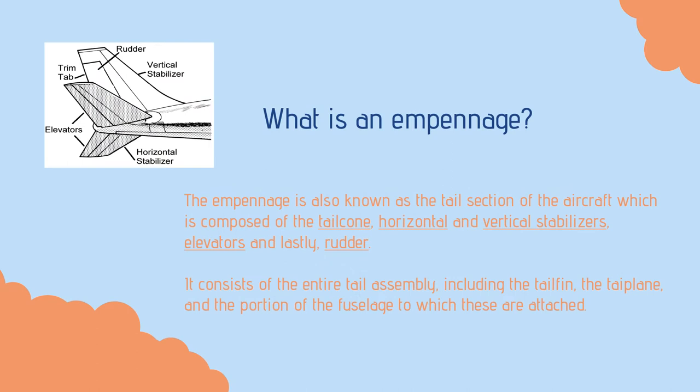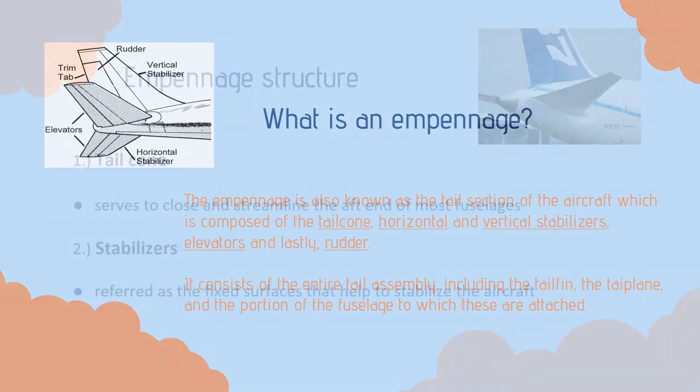It consists of the entire tail assembly, including the tail fin, the tail plane, and the portion of the fuselage to which these are attached.